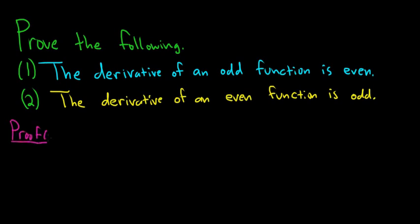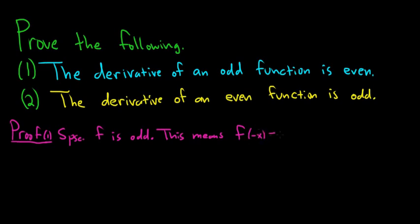Let's do the first one first. We have to prove that the derivative of an odd function is even. We have to start by assuming we have an odd function, take its derivative, and then show it's even. Suppose f is odd. This means, for every x in the domain of the function, f of negative x is equal to negative f of x, and this is true for all x in the domain.